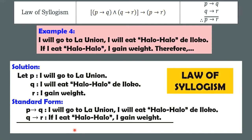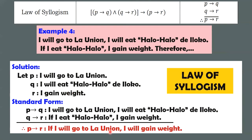This is the form of the law of syllogism. It's like transitivity — if A equals B, and B equals C, then A equals C. Similarly here: if P then Q, and if Q then R, therefore if P then R. So our conclusion is: if P, then R. This is your P, and this is your R. The conclusion is: if I will go to La Union, I will gain weight.